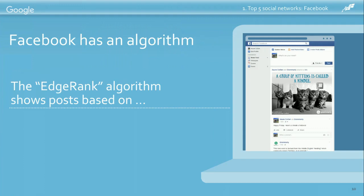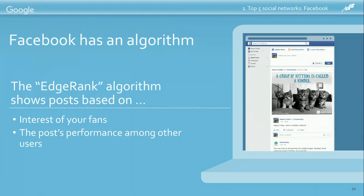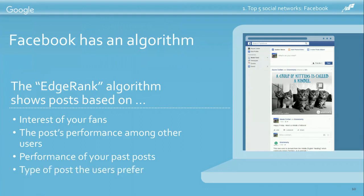EdgeRank is an algorithm that affects how your content is seen. Here's what it looks at: first, your fans' interest — fans who have recently interacted with your page will have a much better chance of seeing your content. How well your post has done with other Facebook users is another important part, so a popular post has a better chance appearing in the news feed. The performance of your past posts matters — once you start posting content that works, you'll be in a better position for future posts. The type of post your fans prefer also factors in; someone who interacted with videos will be more likely to see your next video post.